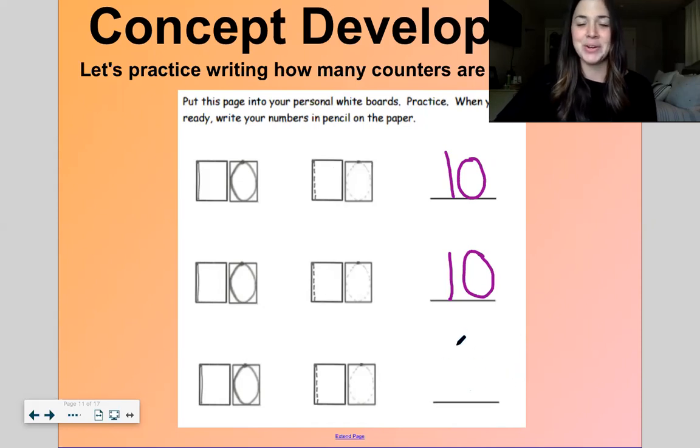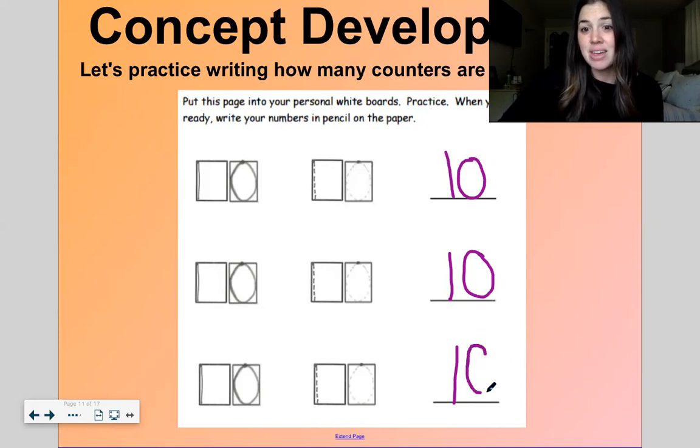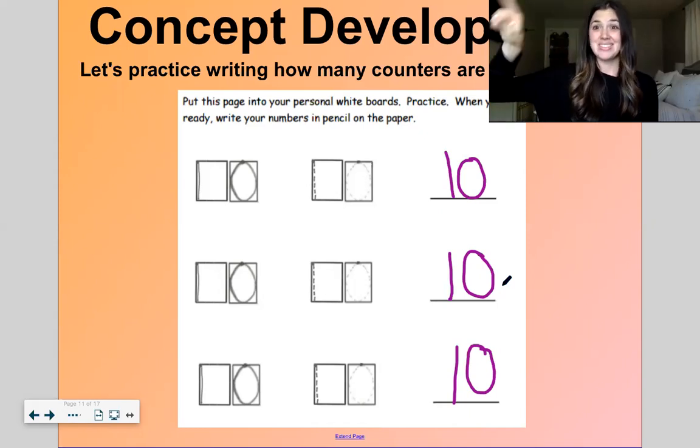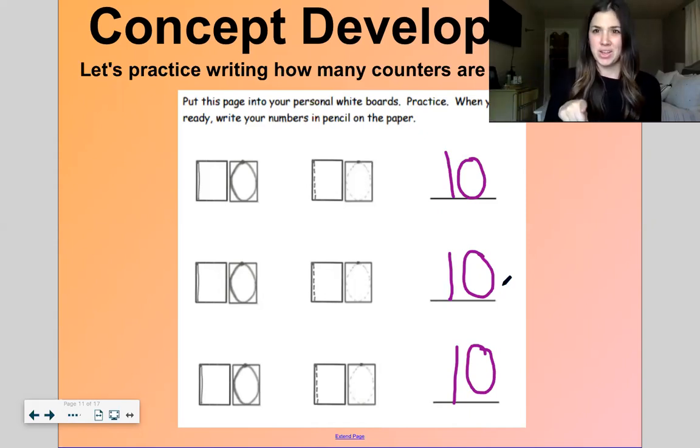Kind of like an O, huh? Straight line down, then you're done. So you make the number one, and then next make a zero. We got it. Let's practice in the air if you don't have a pencil. One, then a zero. One more time. One, then a zero. Nice.